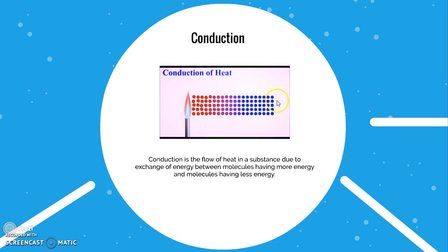We have a substance consisting of a large number of molecules. A candle flame is present at one end. In the portion near the flame, there is a large amount of heat — meaning the molecules there have higher kinetic energies; they are moving very vibrantly and violently. These higher kinetic energy molecules will then strike the first set of molecules in the substance.